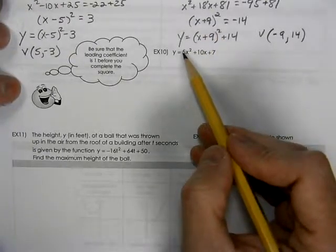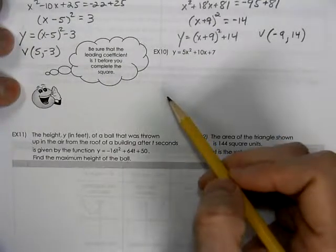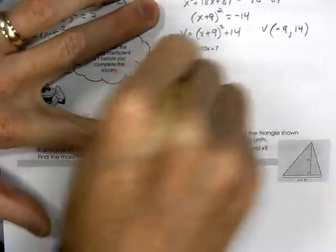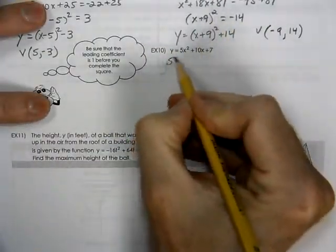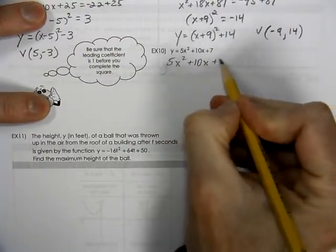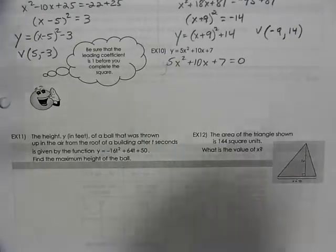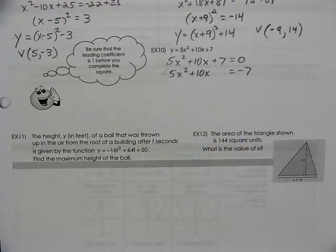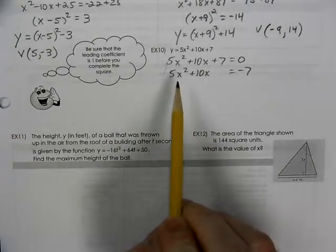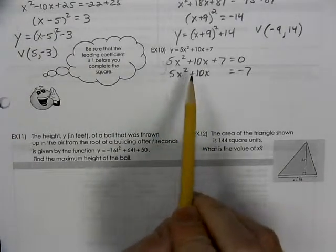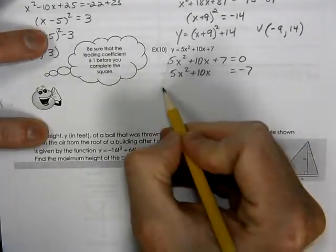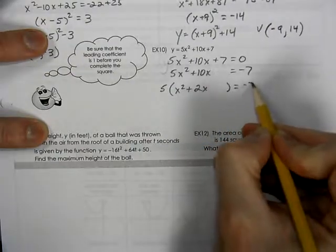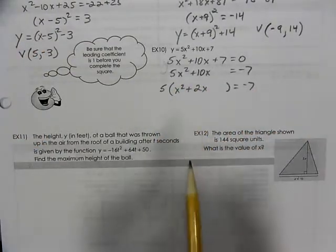Our next example, you're going to notice that the a value is something larger than 1. Let's start off like we have all the other ones. We'll equal it to 0. We'll subtract across the 7. Now, we talked about how the a value has to be 1 when you complete the square. So we have to factor our 5, just the 5, not the x.